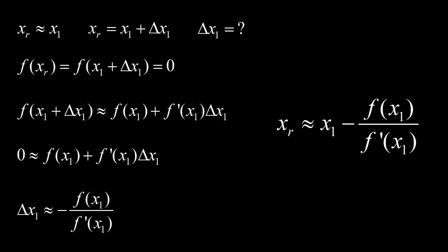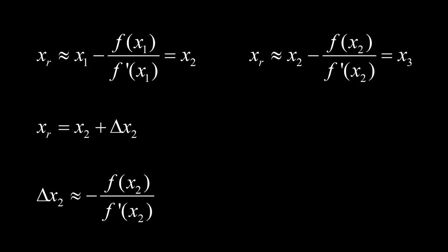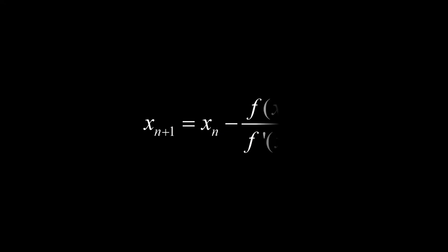Tawagin natin ang bagong estimate na ito na x2. So we can write xr as x2 plus some error or displacement from x2 delta x2. Again, using a linear approximation, we can estimate delta x2 as negative f of x2 divided by f prime of x2. This gives us a new estimate, x3. So we can write xr as x3 plus some error or displacement from x3 delta x3. We can approximate the displacement as negative f of x3 divided by f prime of x3. Therefore, the next estimate can always be written in terms of the current estimate like this. This is the essence of the Newton-Raphson method.